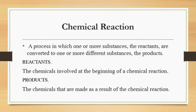The definition of chemical reaction: it is a process in which one or more substances called reactants are converted to one or more different substances called products.